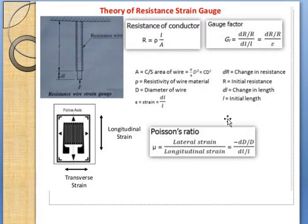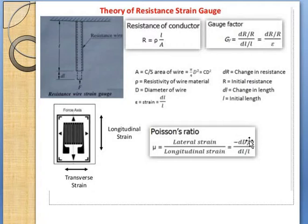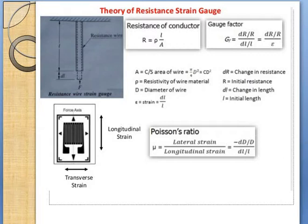In the gauge factor, dR is the change in resistance and R is the initial resistance. Poisson's ratio is lateral strain divided by longitudinal strain. The lateral strain is related to the diameter, and the longitudinal strain is related to the length. The lateral strain gives us −dD/D — the minus sign because the diameter is decreasing — divided by dL/L, which is the longitudinal strain.